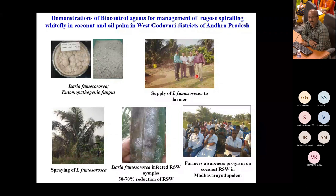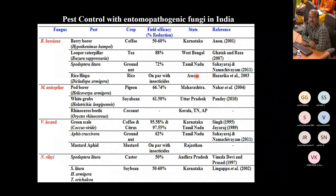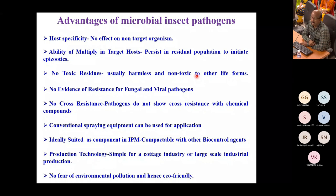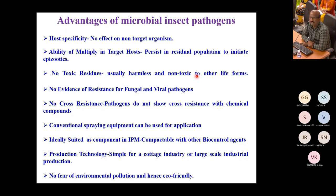Our scientists conducted training and awareness programs in Andhra Pradesh and West Godavari for management of rugose spiraling whitefly. Several entomopathogenic fungi products are commercially available in India. Advantages include high host specificity, no effect on non-target organisms, multiplication in the target host, persistence in the residual population to initiate epizootics, no toxic residues, harmless to natural enemies, and no evidence of resistance or cross-resistance development.